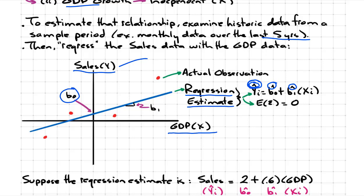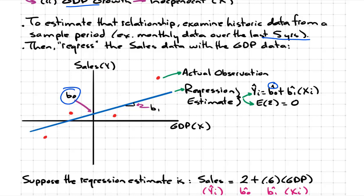Let's go back to constructing the equation of that regression line. We start with B0 — an estimate of the intercept term, because remember this is just based on a sample. Then we go up a slope, measured by beta one, stopping where we get to the value for GDP, the independent variable.